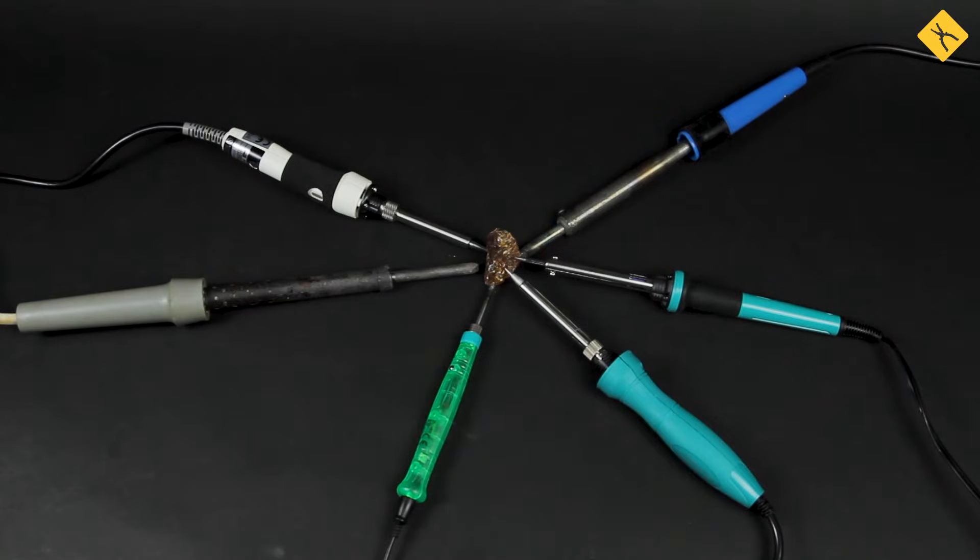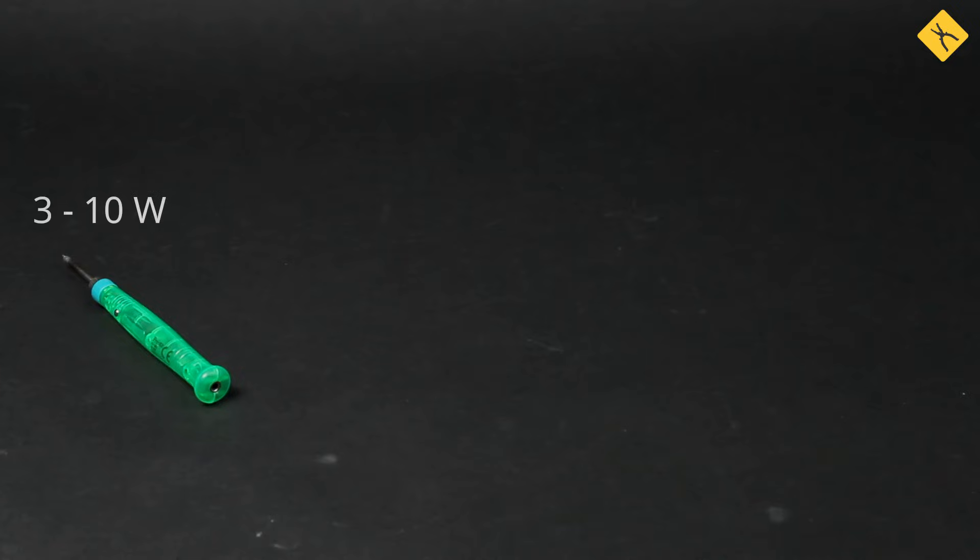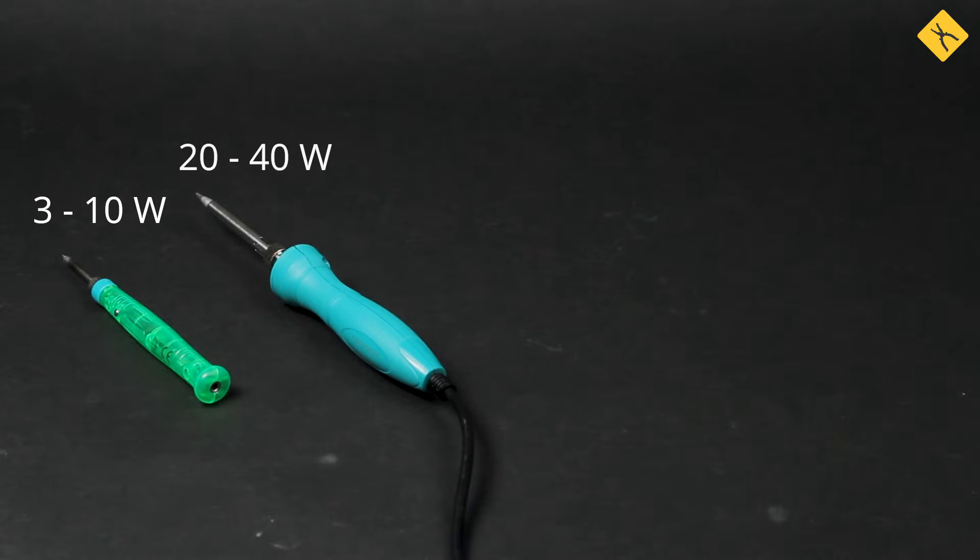Soldering irons of different power are used for different tasks. 3-10W soldering irons are used for desoldering small components, microchips and connectors. 20-40W soldering irons are used for most components and PCBs,